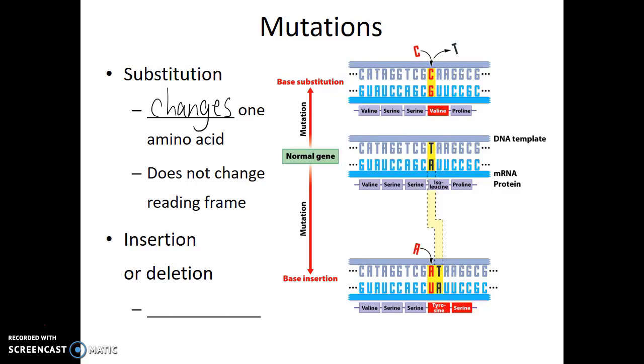Insertion or deletion mutations add or remove a letter from the DNA sequence. This can cause what's known as a frameshift mutation. Frameshift mutations end up shifting the reading frame, and this can cause an impact everywhere from the point of mutation down through the rest of the protein. Frameshift mutations often will impact multiple amino acids, not just a single one.